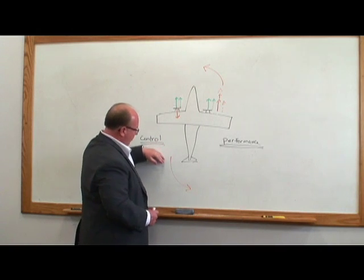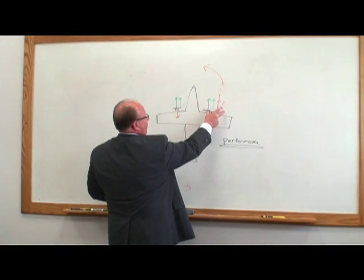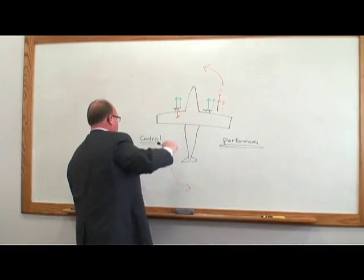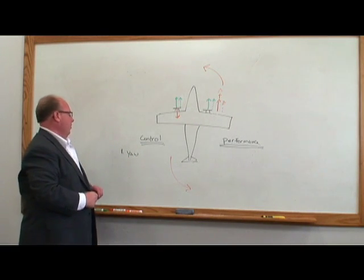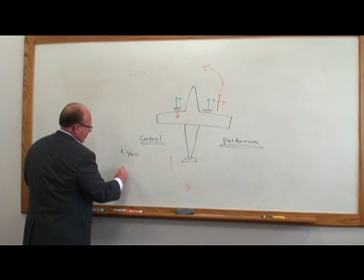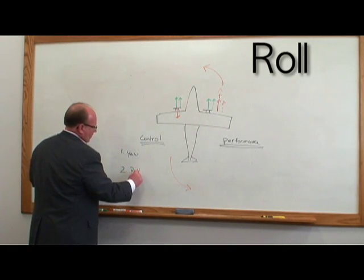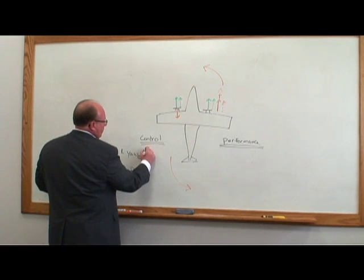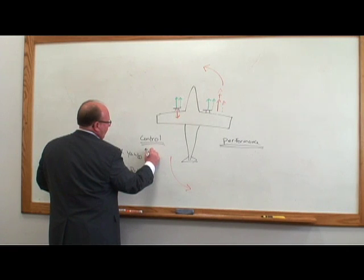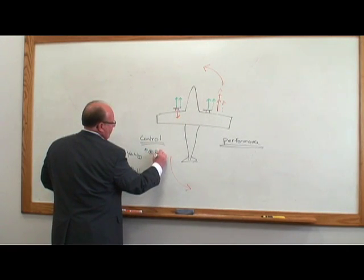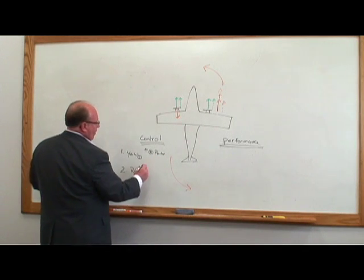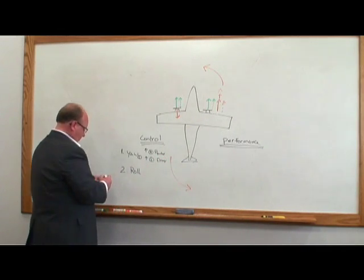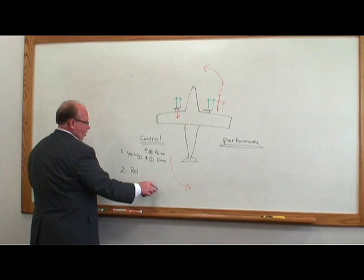So the drag on the left engine is pulling it around this way, and the increased P-factor causing an increase in torque on the right engine is pulling it that way too. That's why we have yaw. The second problem we have is roll. So the airplane wants to yaw left due to what? Due to increase in right engine P-factor. And it wants to yaw left due to an increase in left engine drag. So those are the yaw issues.